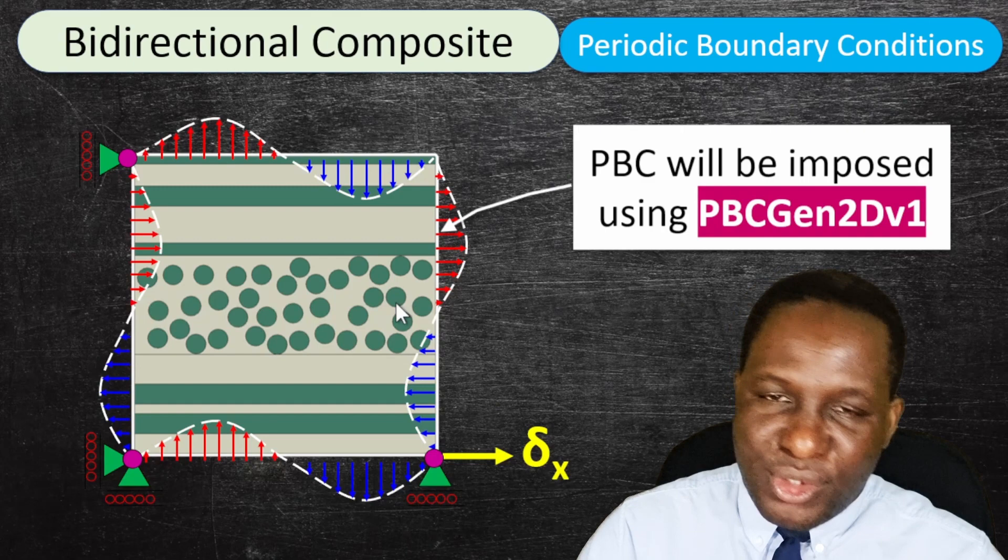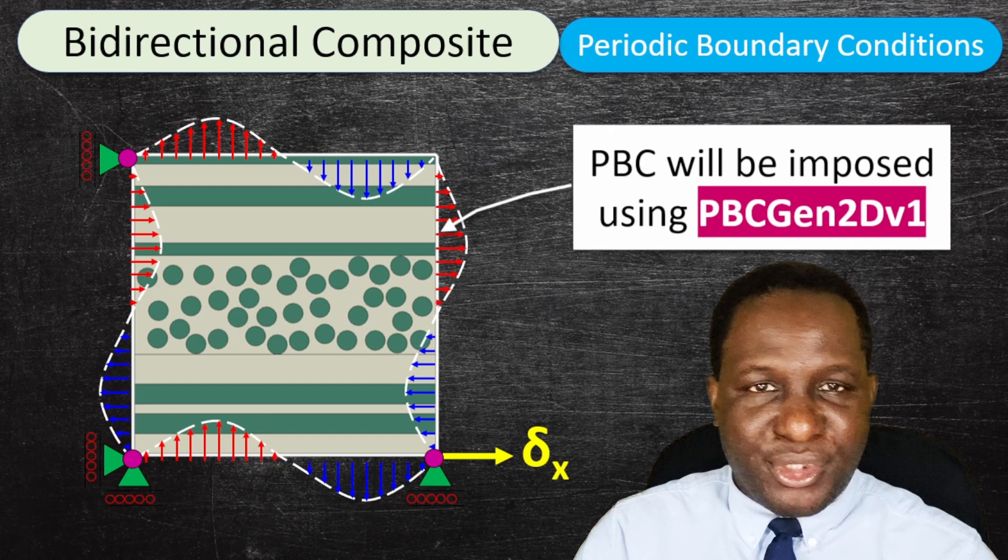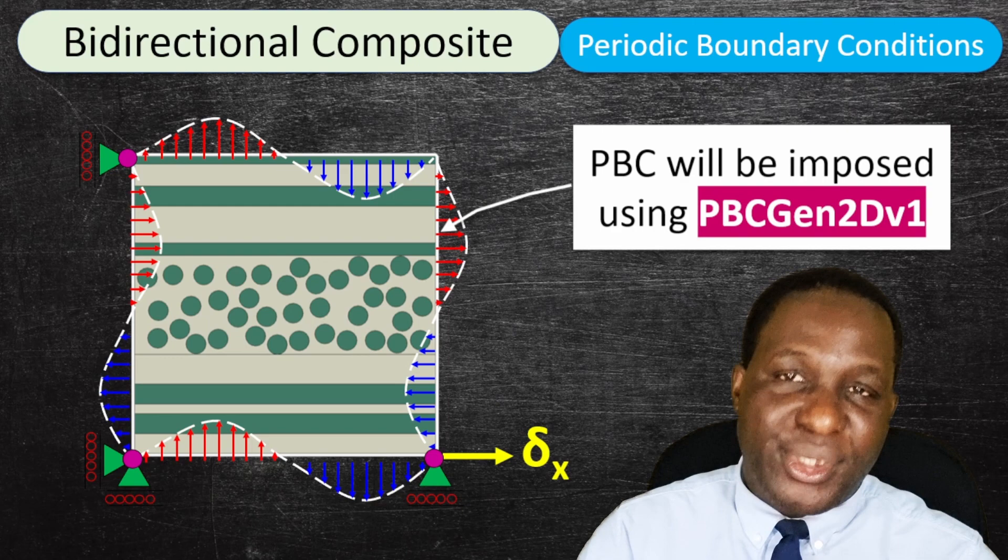To implement the periodic boundary condition, we'll use another code I developed called PBC Gen 2D version one. If you want to learn more about this code, look in the cards — there's a video explaining how it works, and the description section has details on how to get hold of it.